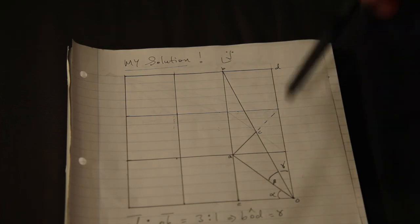And you can clearly see from that construction that alpha plus beta plus gamma is 90 degrees.